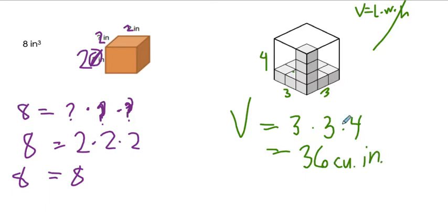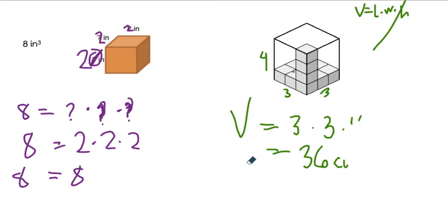Remember, when labeling things that don't have a measurement indicator like inches, you use the standard units — which we call cubic units. I accidentally wrote cubic inches, but it should be cubic units. So the answer is 36 cubic units.